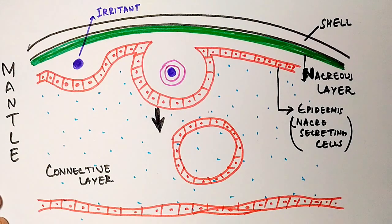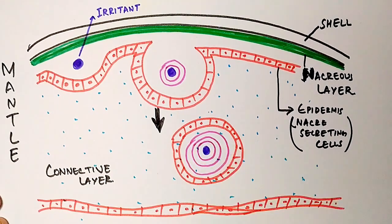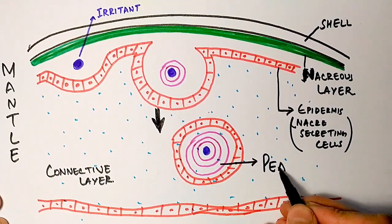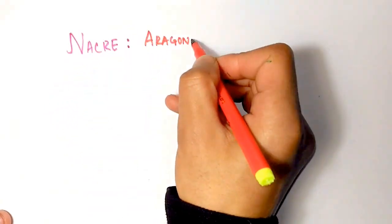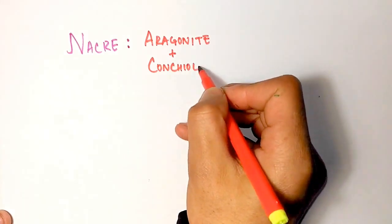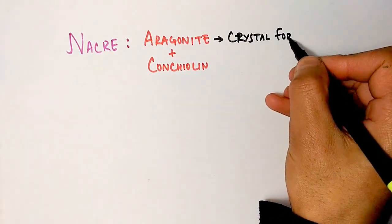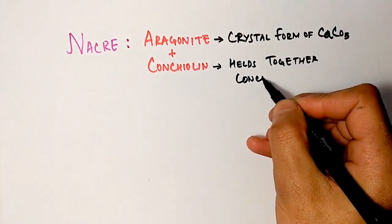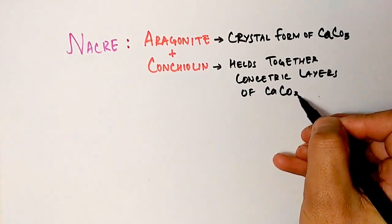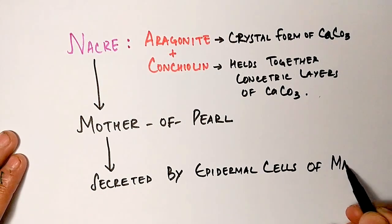Epidermis cells continuously secrete nacre around it in concentric layers for some long time and ultimately this pearl is formed. Now we see the chemical composition of nacre. Nacre is formed of aragonite plus conchiolin. Aragonite is a crystal form of calcium carbonate while this conchiolin is used here to hold together these concentric layers. So nacre, what we call as mother of pearl, is secreted by epidermis cells.